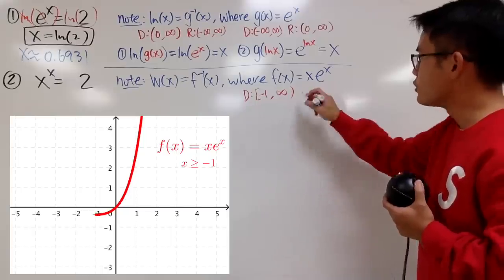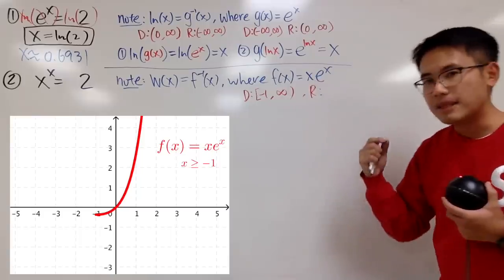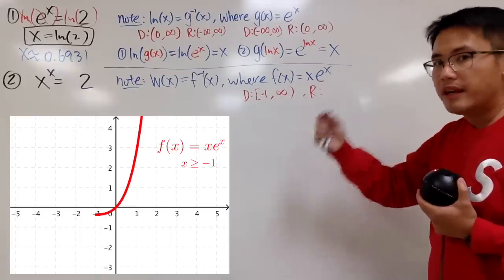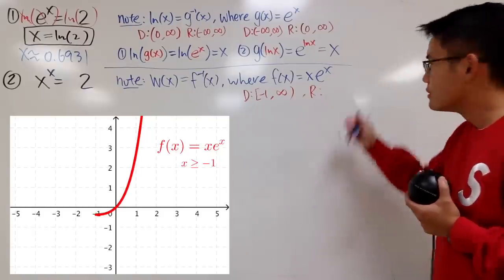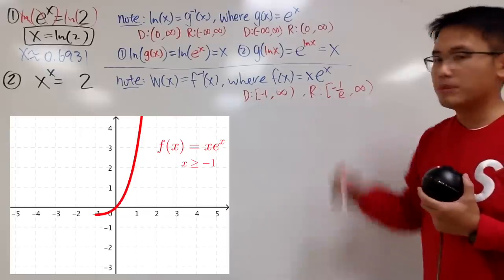Well, according to this domain, the range of this is just going to be, you plug in negative 1 here, that's the minimum, so you get negative 1 times e to the negative 1, it will be negative 1 over e. So you go from negative 1 over e to positive infinity, including these two endpoints.